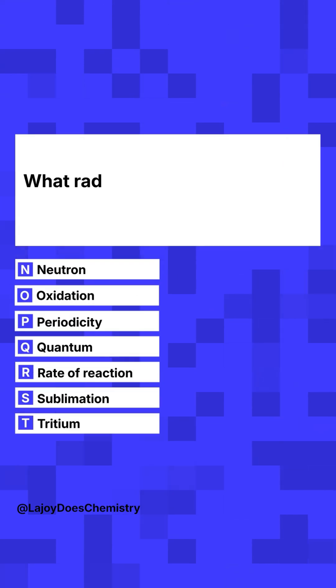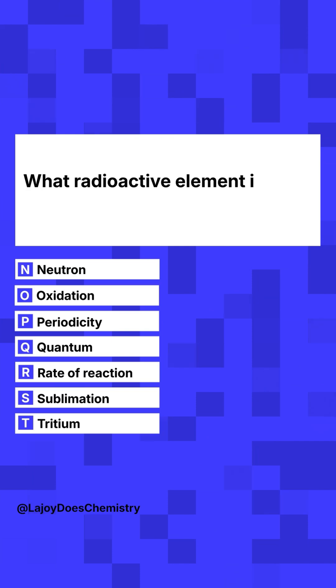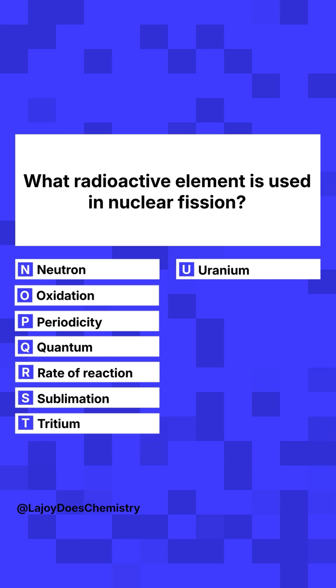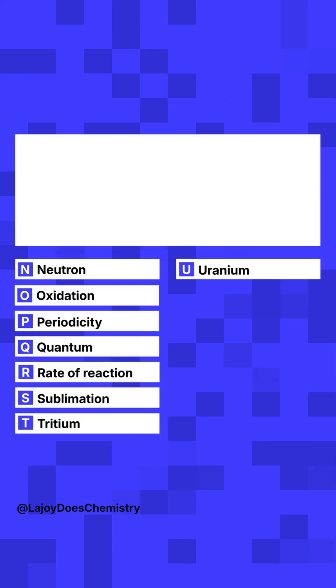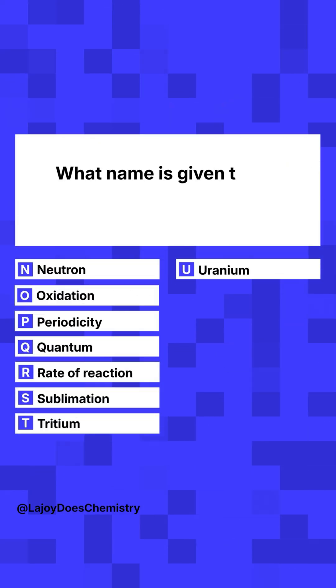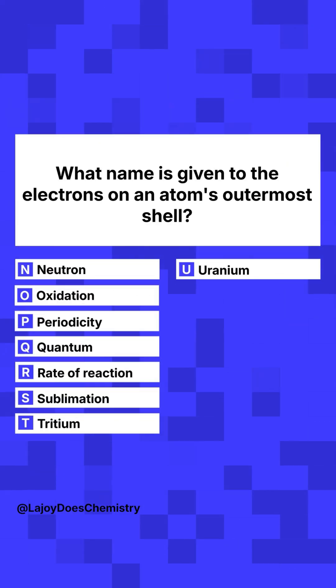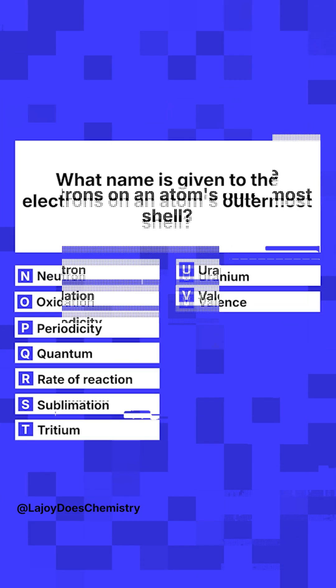U. What radioactive element is used in nuclear fission? Uranium. V. What name is given to the electrons on an atom's outermost shell? Valence.